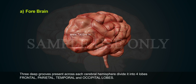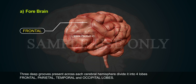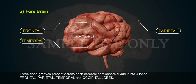Three deep grooves present across each cerebral hemisphere divide it into four lobes: frontal, parietal, temporal and occipital lobes.